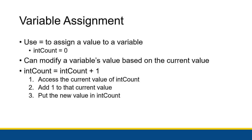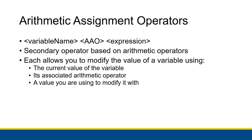So we have this idea that we can modify a variable's value based on that value itself. Another tool we have is the arithmetic assignment operator, which works a bit like variable assignment — normally variable name equals expression — but now we have variable name, then one of these operators, then still an expression. This is a secondary operator that combines multiple primary operations — like addition or variable assignment — into one more convenient thing. Each arithmetic assignment operator lets you modify a variable's value using its current value, the associated arithmetic operator, and a value you're using to modify it with.